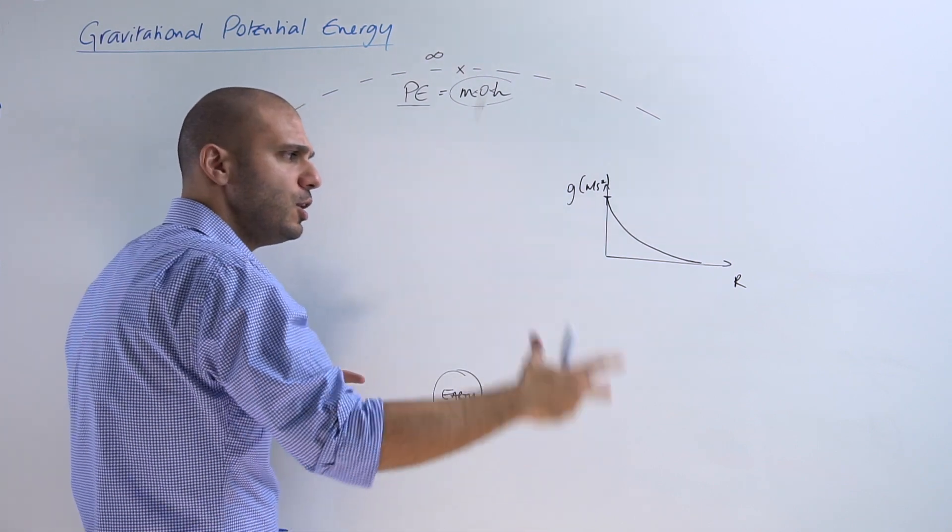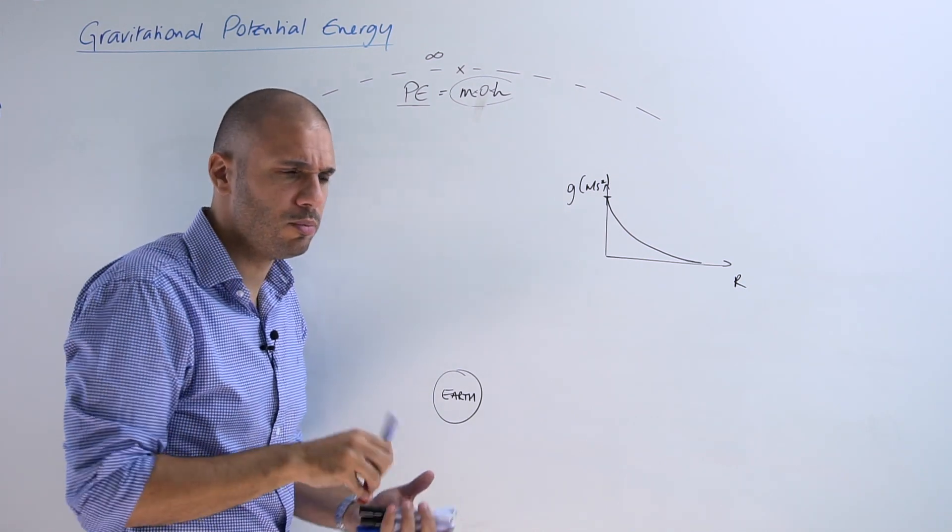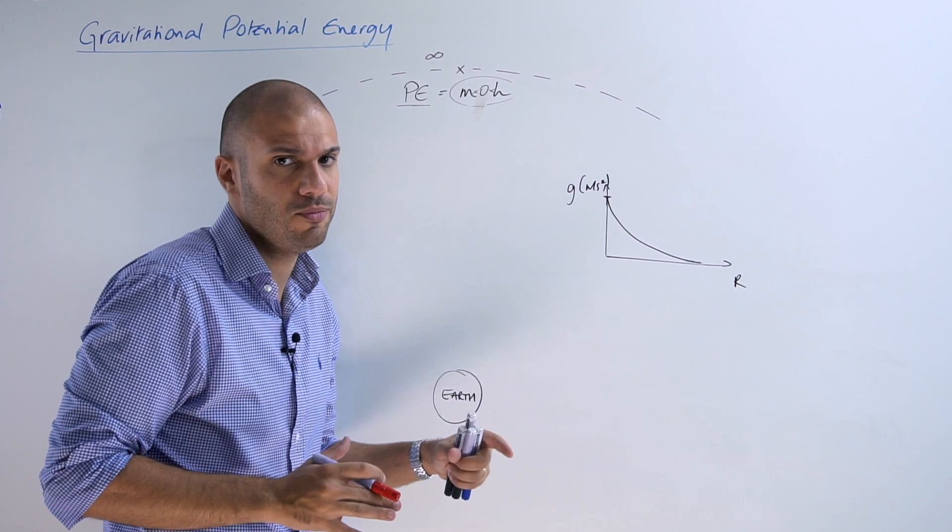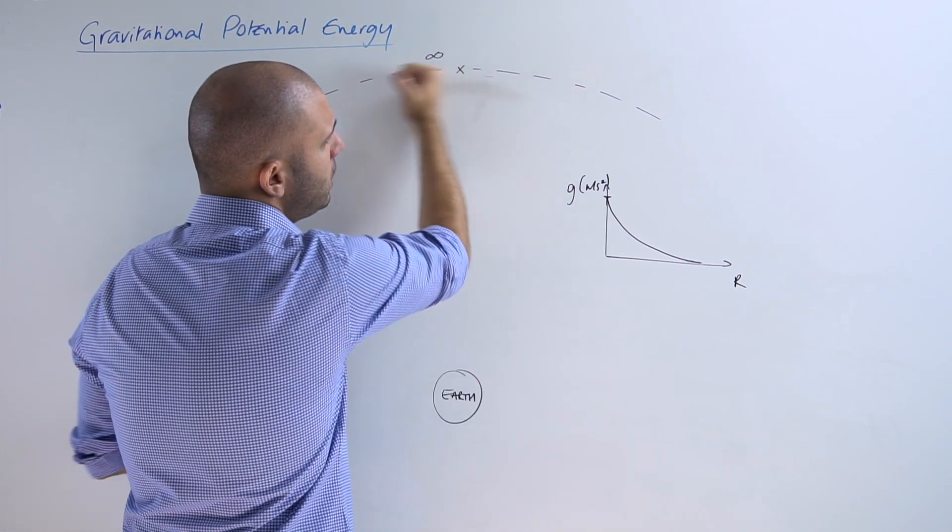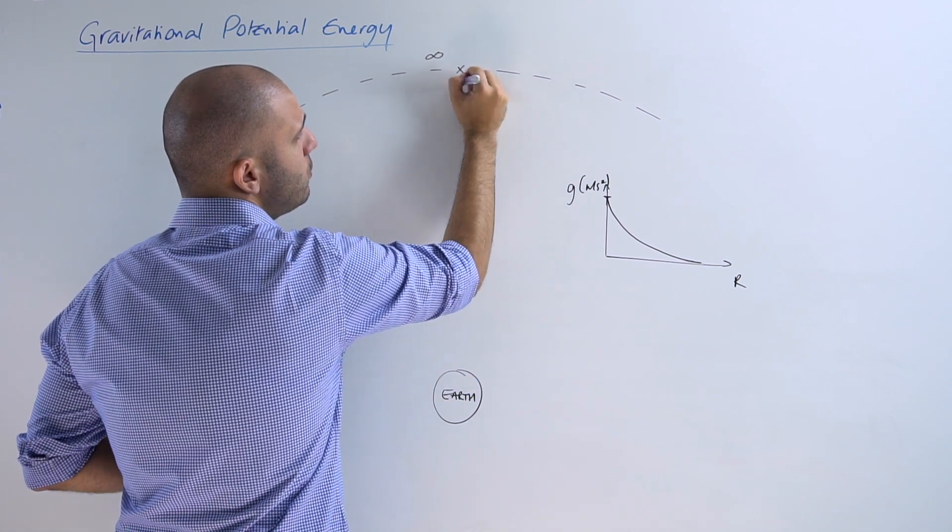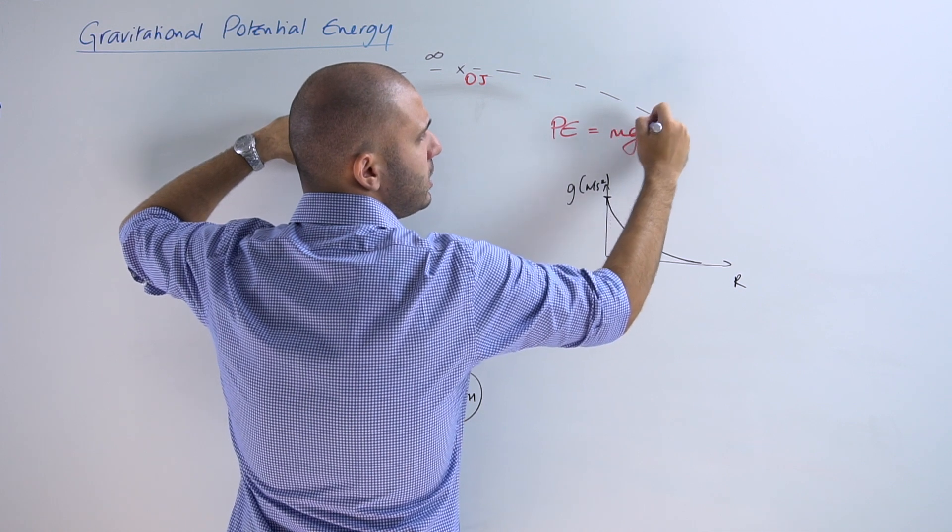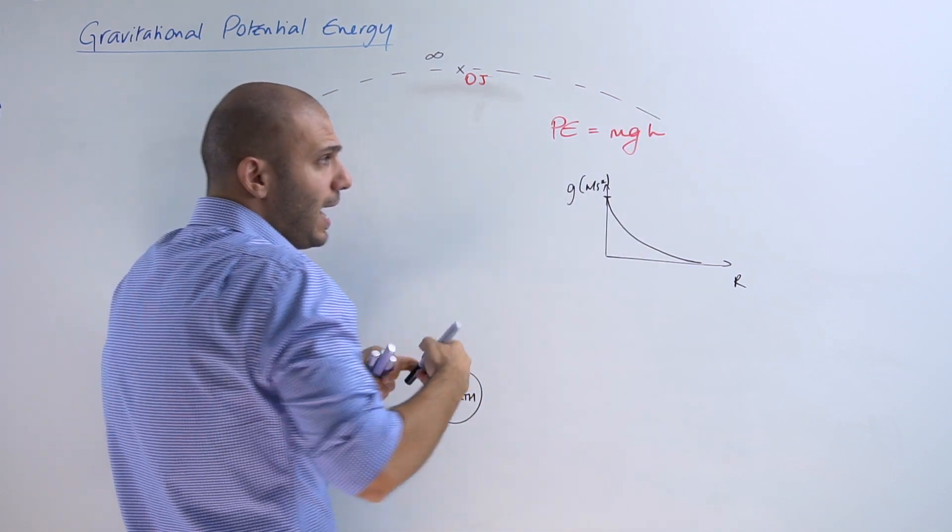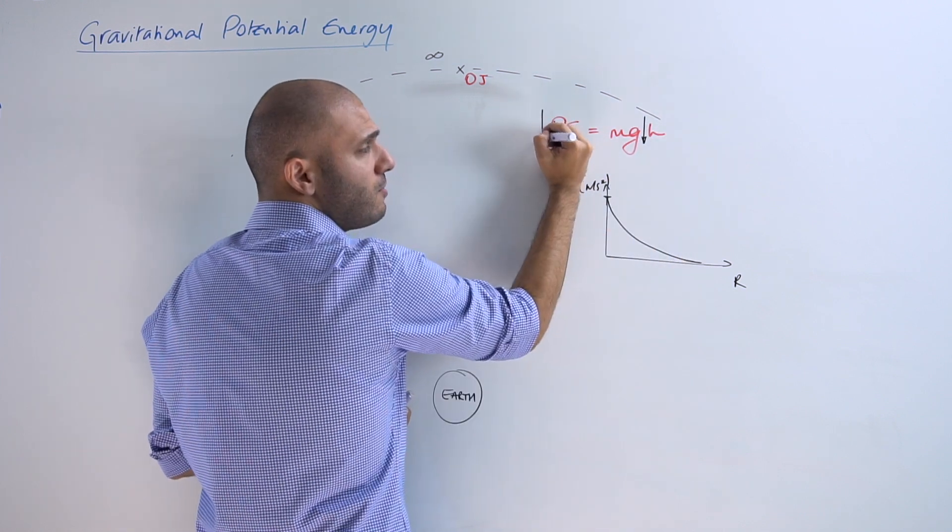This obviously causes a problem you never had to deal with before. Given that this value up top for potential energy is now zero joules, and given also that from the equation PE = mgh, as we decrease the height the value of the gravitational potential energy decreases because they are directly proportional.